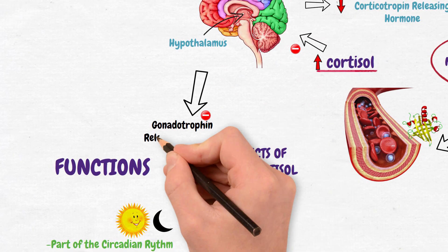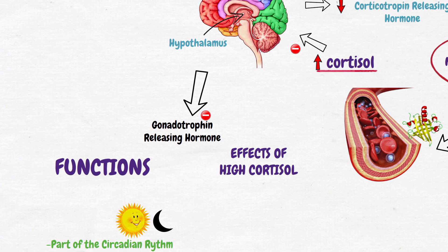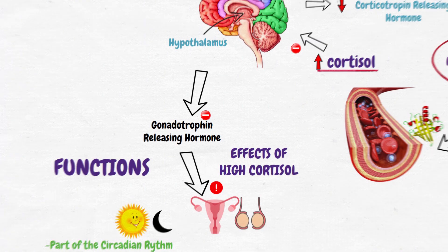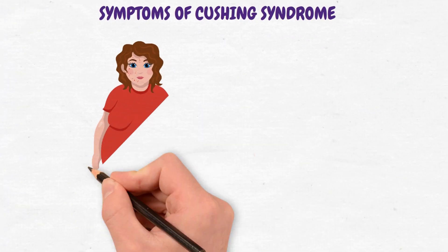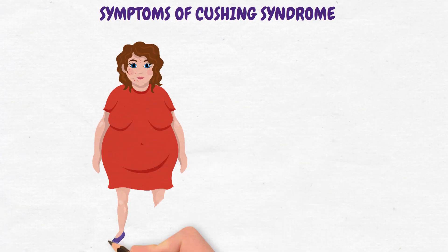The effects of high cortisol in Cushing's syndrome include inhibition of the release of gonadotropin-releasing hormone (GnRH).